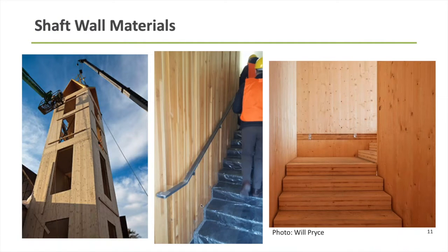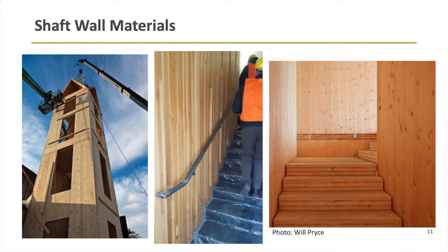Most of this presentation will be focused on the use of light frame wood shaft walls — two-by studs. There are some projects going the route of using mass timber as a shaft wall enclosure material. I'm not going to spend a lot of time on what mass timber is, but just to point out some examples of projects that have used it as a shaft wall material. The ones on the left and right are using cross-laminated timber, or CLT, and the one in the middle is using NLT, or nail-laminated timber, as a shaft enclosure material.